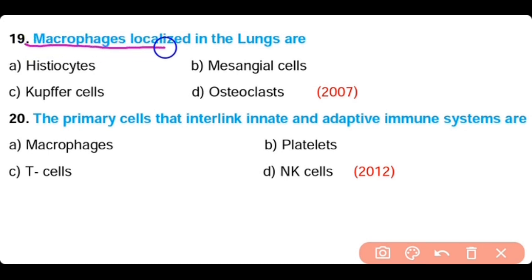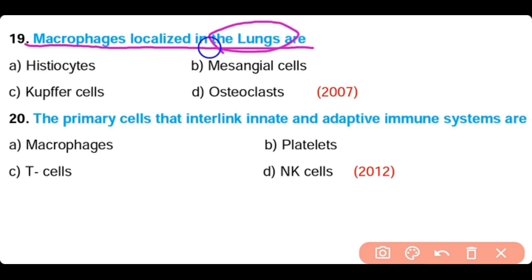Question number 19. Macrophages that are localized in the lungs are: histiocytes, mesangial cells, Kupffer cells, or osteoclasts. No option is correct because the macrophages located in the lungs are known as alveolar macrophages.